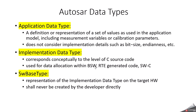What is an application data type? The application data type represents a set of values which are used in the application model, including measurement variables or calibration parameters. Whatever is useful for the calibration engineer is related to the application data type. The implementation data type is at the general C language or C source code level — it is used for data allocation within the base software, RTE, or general software component code. You can consider it this way: when you want to declare a variable as unsigned 8, unsigned 16, or unsigned 32, you use the implementation data type.